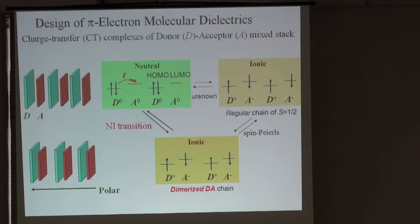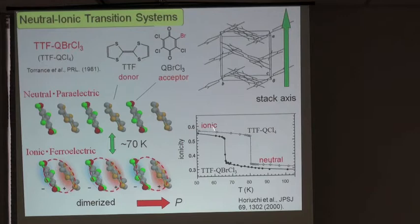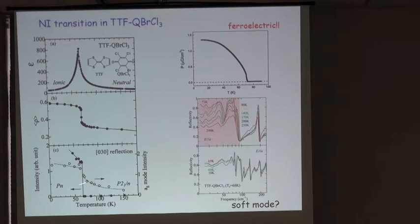The most famous example is TTF-chloranil, and also TTF-QBrCl3 with bromine-substituted chloranil. The molecular ionicity transitions from almost neutral (~0.3) to above 0.5 ionic. This chain is magnetic in nature but also subject to spin-Peierls instability, forming dimers and generating polarization. At the neutral-ionic transition temperature we observe a very large enhancement of the dielectric susceptibility, and the lattice shows a sudden change into an ionic and polar state.